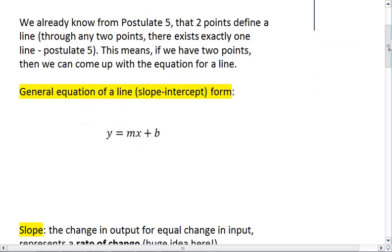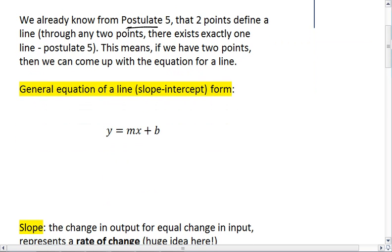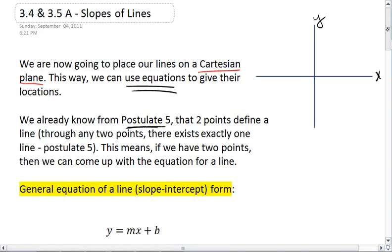Well, we already know from postulate 5 that two points define a line. Specifically, through any two points, there exists exactly one line. This means if we have two points on a Cartesian plane, we can come up with the equation for that line. And these videos will show you how to do that.